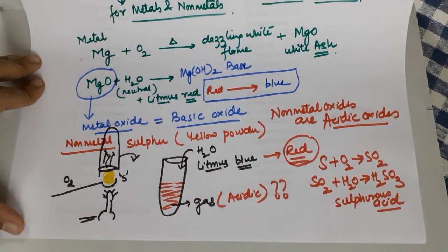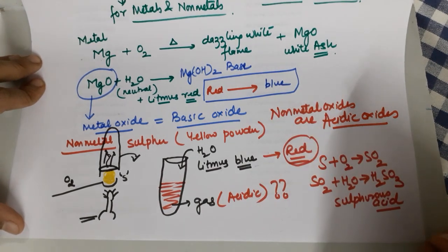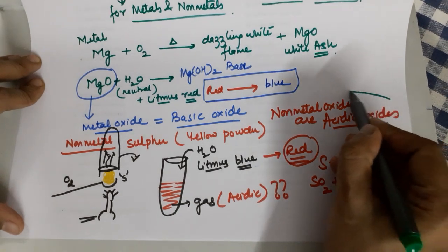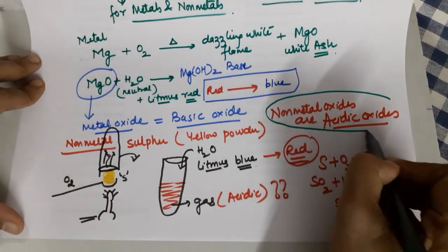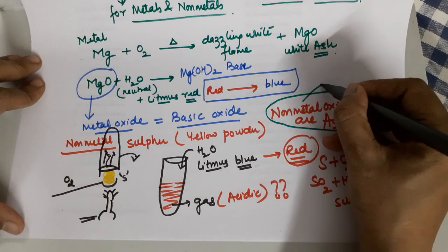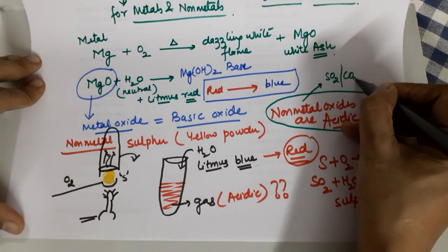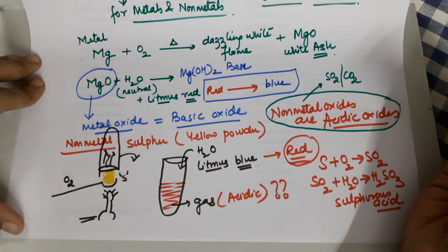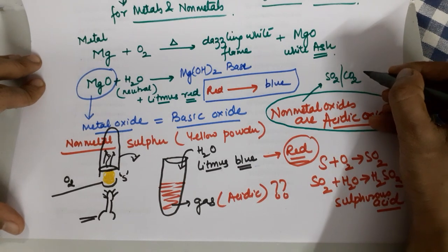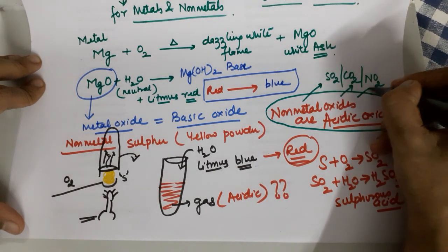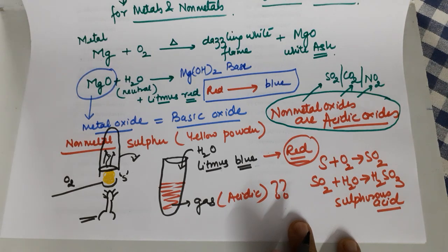So metallic oxides are basic while non-metallic oxides are acidic oxides. Examples of nonmetallic oxides: SO₂ we have already done. CO₂ also qualifies because carbon is a nonmetal, so it comes under the category of an acidic oxide. NO₂ would also fall under the category of an acidic oxide.